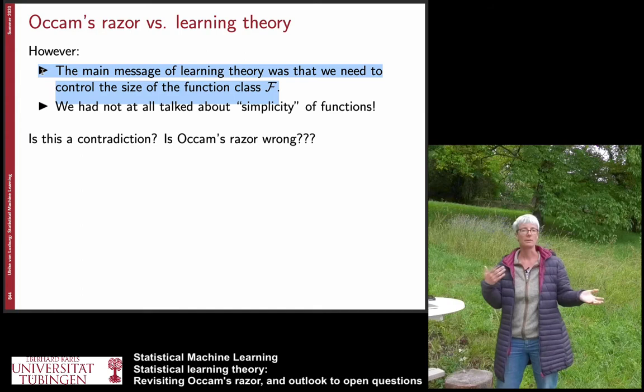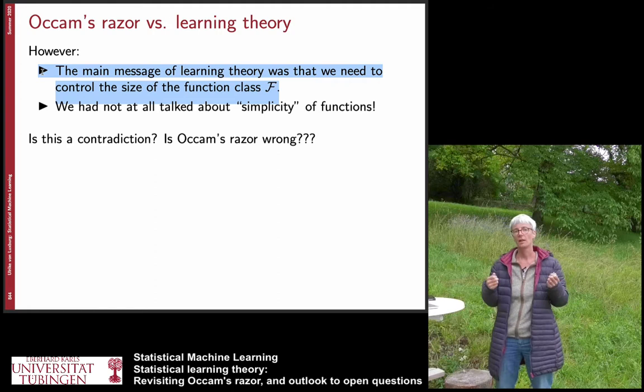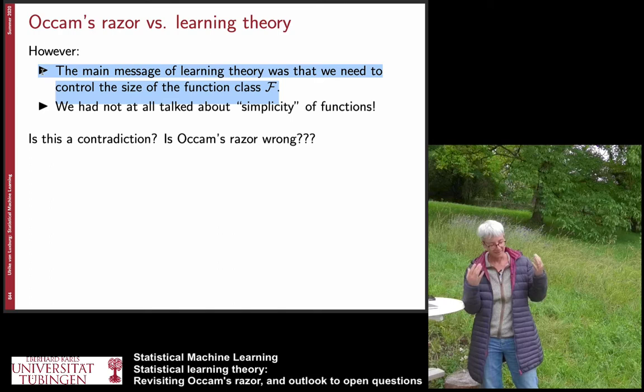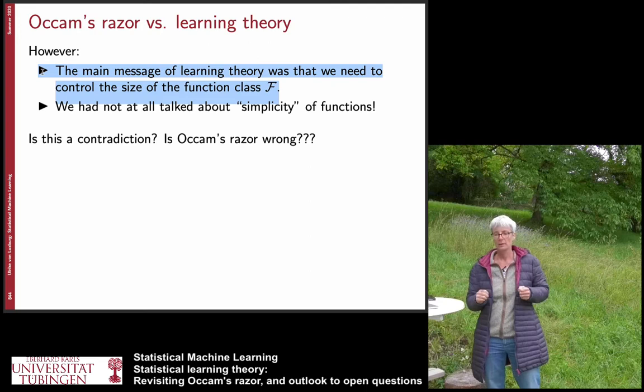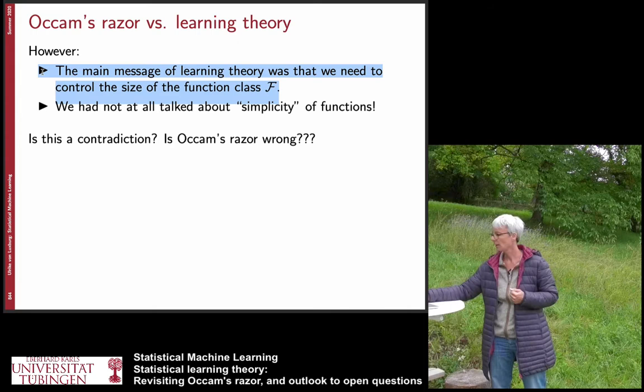If I have a function space of 10 functions, it doesn't matter whether those functions are simple or not — I simply need to count them. It's not about whether it's a polynomial of small or high degree. So the question is: is there a contradiction between learning theory and Occam's razor, or are these two different ways to look at the same thing? I'd like you to lean back, take a couple of minutes, think about it, and then come back after pausing the video.